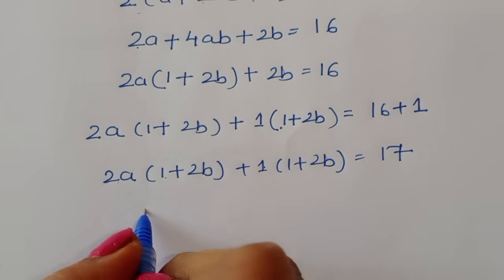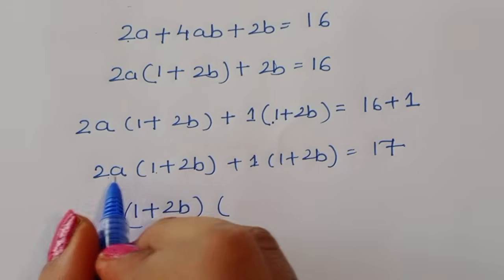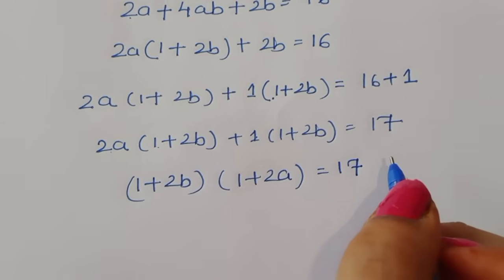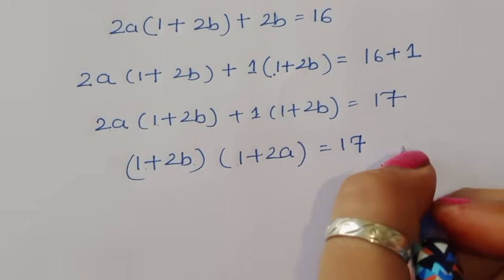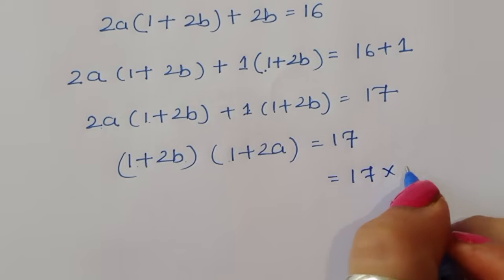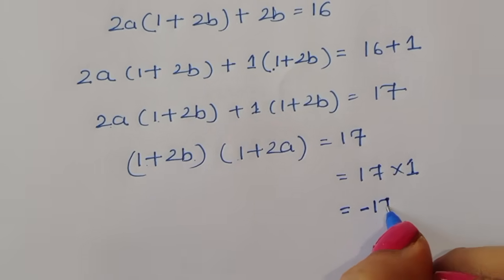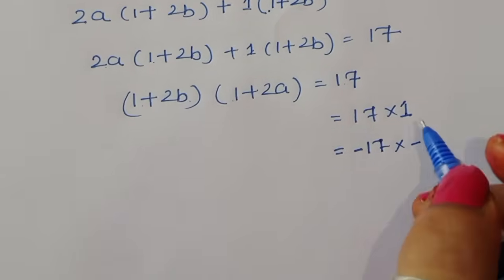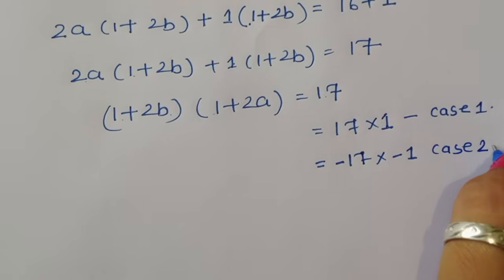So (1 + 2b)(1 + 2a) = 17. Now we have the equation (1 + 2b)(1 + 2a) = 17. The factors of 17 are: 17 × 1, and also (−17) × (−1), since minus times minus gives plus 17. So we have two cases — Case 1 and Case 2.